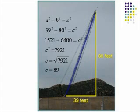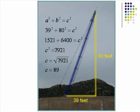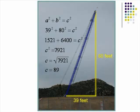Here are the steps to solve this problem. We know that A squared plus B squared equals C squared for a right triangle. A equals 39 and B equals 80 feet, so 39 squared plus 80 squared equals C squared. 39 squared equals 1521, and 80 squared equals 6400. Therefore, C squared equals 7921. Taking the square root of both sides, C equals the square root of 7921, or 89 feet.